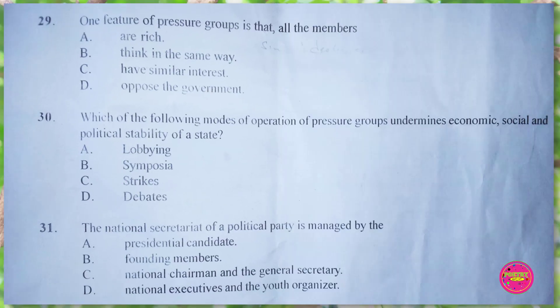Question 29. One feature of a pressure group is that all members: A. are rich, B. think in the same way, C. have similar interests, D. oppose the government. The correct answer is C. have similar interests.